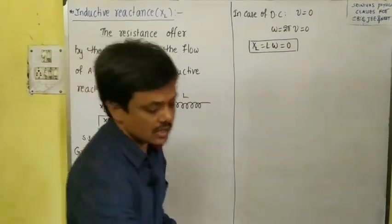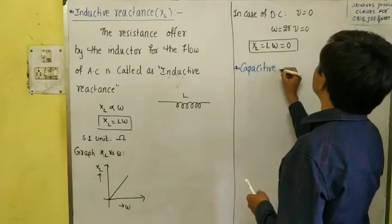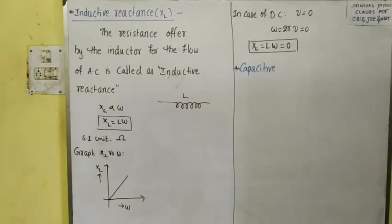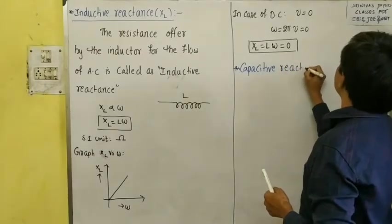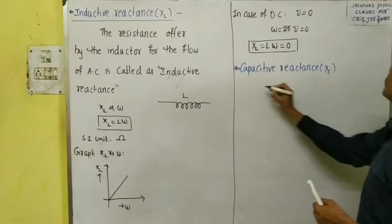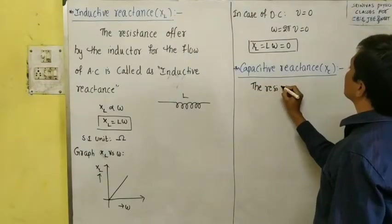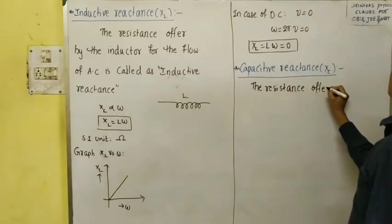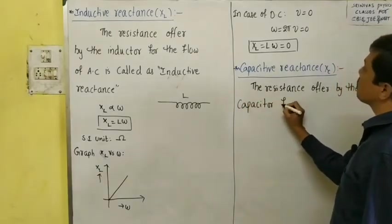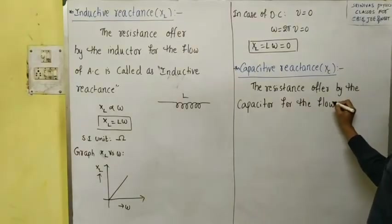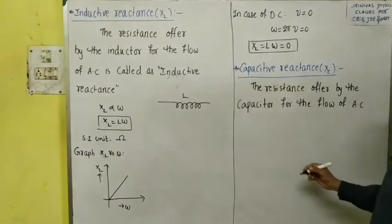The next one is capacitive reactance. Capacitive reactance means the resistance offered by the capacitor for the flow of AC. Capacitive reactance is denoted with XC. If AC current passes through the capacitor, the resistance it offers is called capacitive reactance.